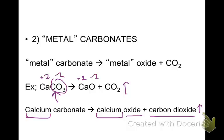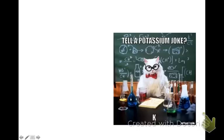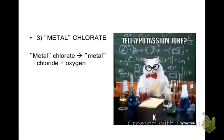We have one more category, and these are your metal chlorates. A metal chlorate is always going to make a metal chloride plus oxygen. It's very similar to the carbonate, but instead of calcium carbonate, we would have calcium chlorate. And that's going to break down into its chloride and oxygen.